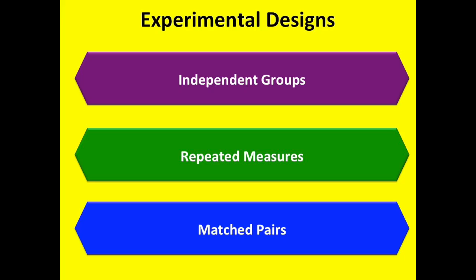Experimental design in psychology means that you've got your participants and now you need to arrange them in such a way as to increase the validity and the reliability of the experiment. There are three experimental designs that you need to know: independent groups, repeated measures, and matched pairs.